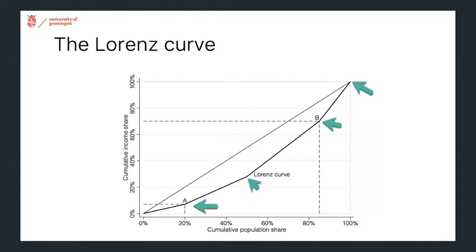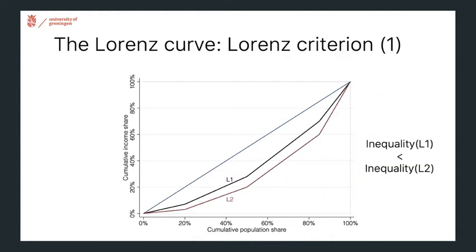The Lorenz curve is quite useful for looking at the income distribution within an economy. If we know the Lorenz curve at two points in time, that tells us something about inequality. As drawn here, curve L1 is higher at all points than curve L2. So the lowest income group has a higher income share under L1 with the same population share. The only way to get from L2 to L1 is through progressive Dalton transfers — moving money from richer people to poorer people.